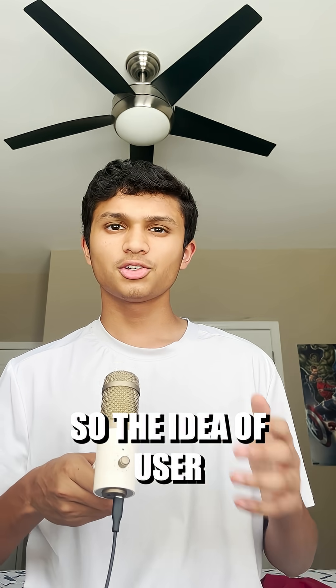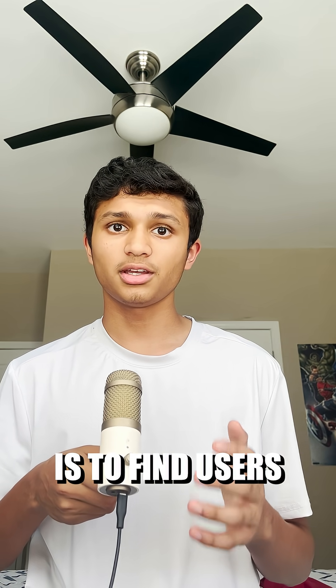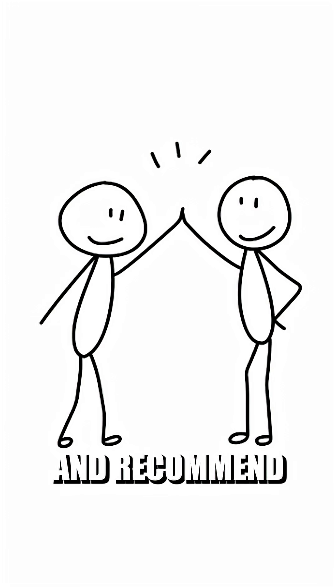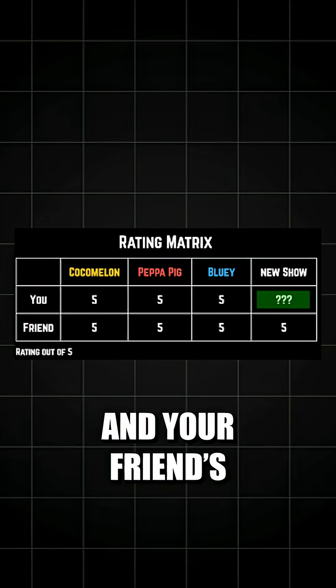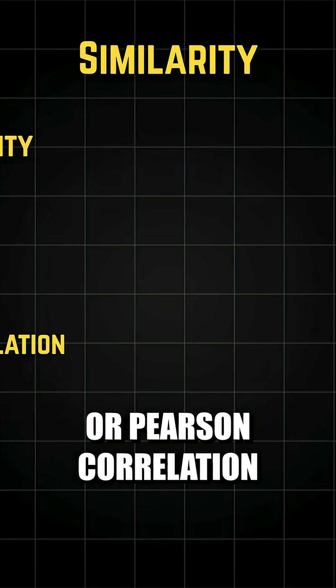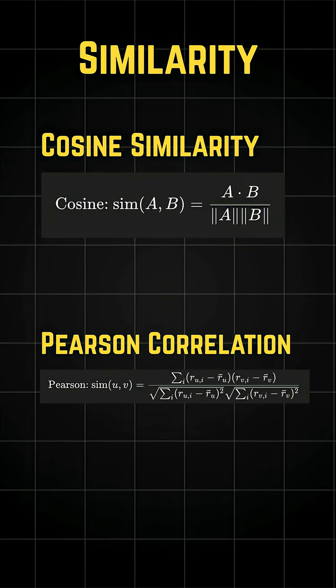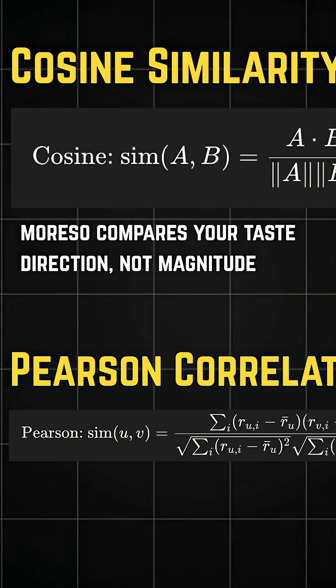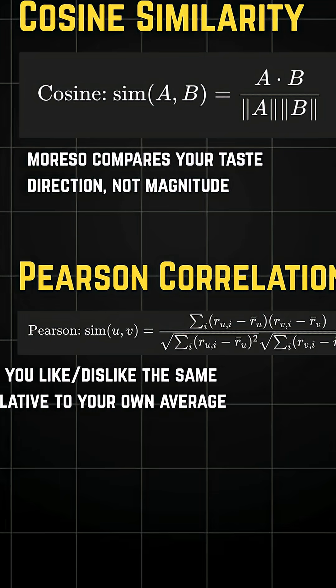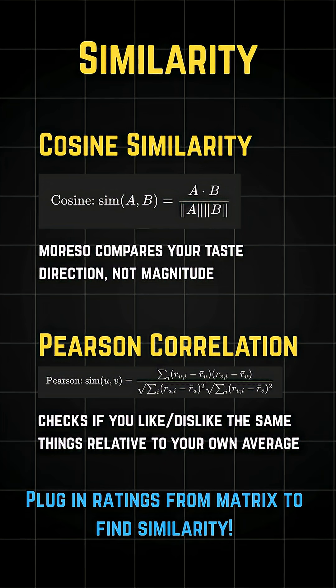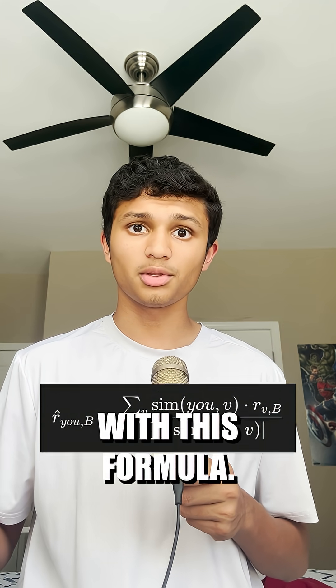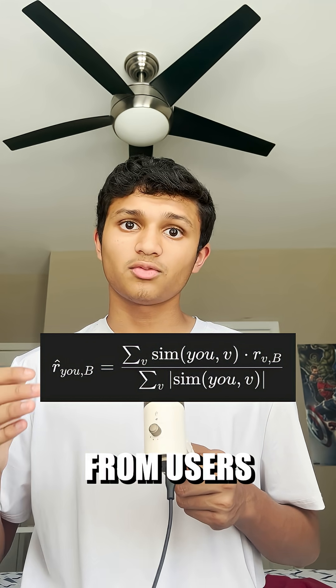Let's go through both types with the math. The idea of user-based collaborative filtering is to find users similar to you and recommend what they've already liked but you haven't seen yet. We create a matrix of you and your friends' ratings of different TV shows. We find similarity using cosine similarity or Pearson correlation, using these formulas. Cosine similarity compares your taste direction, not magnitude. Pearson correlation checks if you like or dislike the same things relative to your own average. Once we know similarity, we predict your rating with this formula — a weighted average of ratings from users like you, weighted by how similar they are to you.